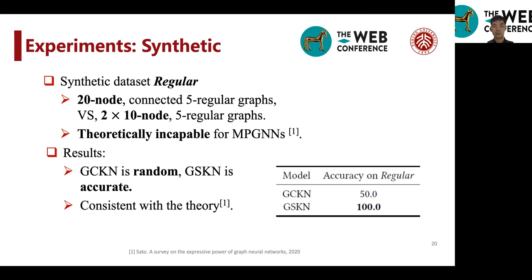And this has been shown to be theoretically incapable for message-passing graph neural networks, such as the GCN introduced below. And the results pretty correspond to the theory in that GCN is random and GSKN is 100% accurate. And therefore, GSKN is more powerful in identifying structures.